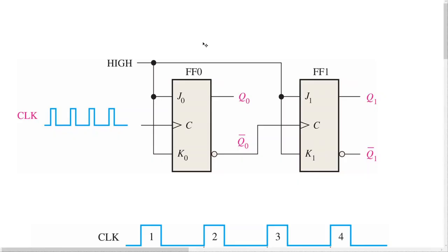Let's talk about asynchronous binary counters, and specifically a two-bit asynchronous binary counter. Notice that the clock of this binary counter is only connected to the first flip-flop FF0. Flip-flop 1 is triggered by not-Q0 of flip-flop 0, and only changes state at the positive-going transition of not-Q0. Because of the inherent propagation delay time through a flip-flop, a transition of the input clock pulse and a transition of not-Q0 can never occur at exactly the same time. Therefore, the flip-flops are never triggered at the same time, so the counter is asynchronous.